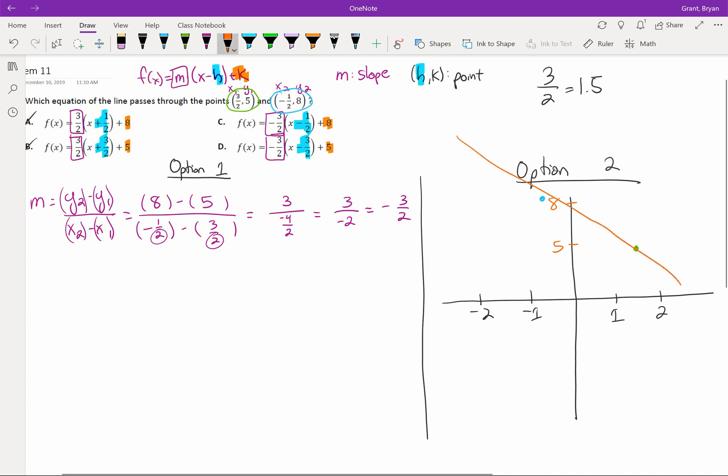And as soon as you see that it's going down, that's a negative slope. And so we know it has to be c or d.